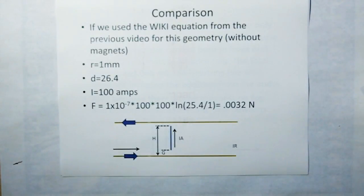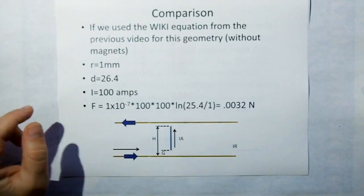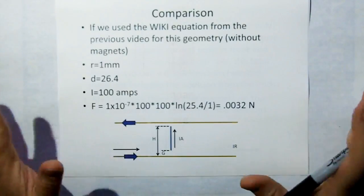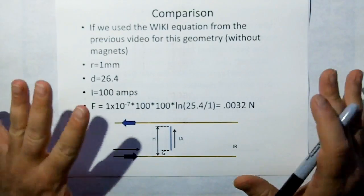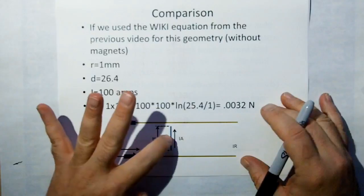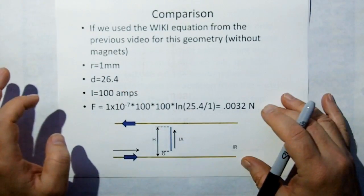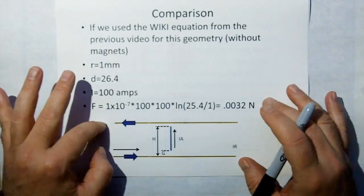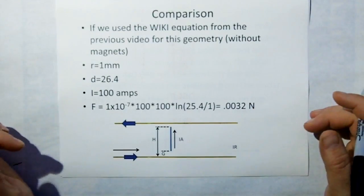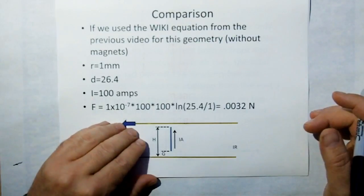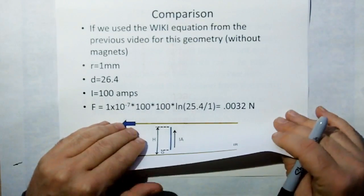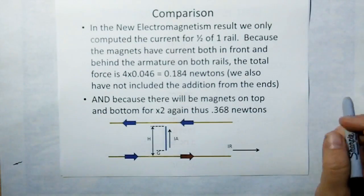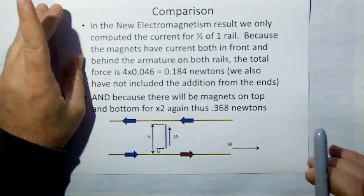Let's do a comparison. If we use the wiki equation from the previous video for this geometry, not using magnets, just the example in the previous one with 100 amps for the rail and 100 amps for the armature, we substitute the same equivalent values we used here, we end up with 3.2 millinewtons.